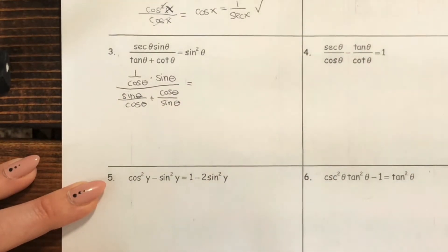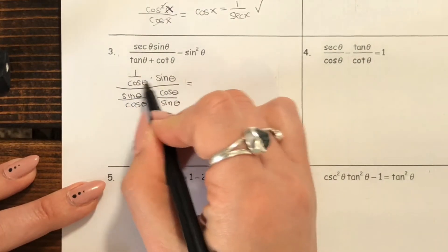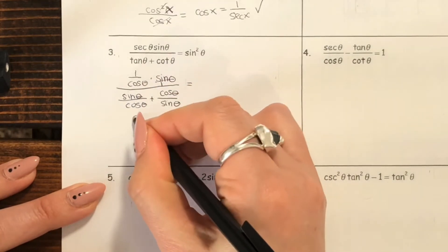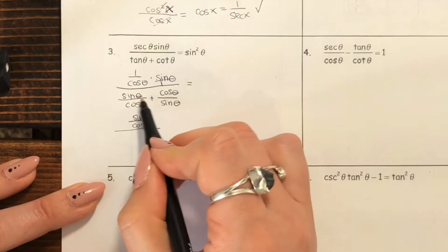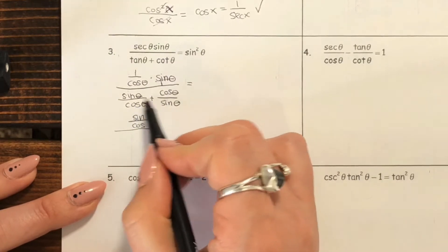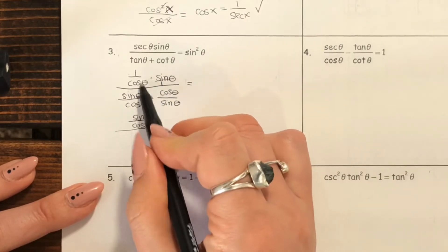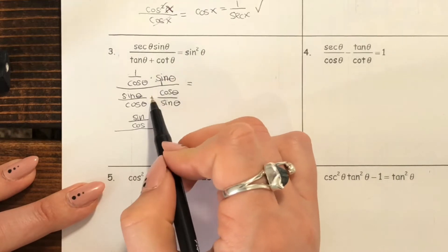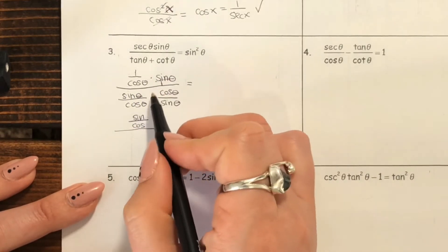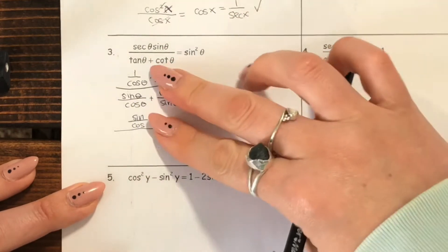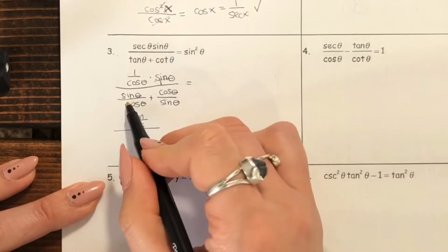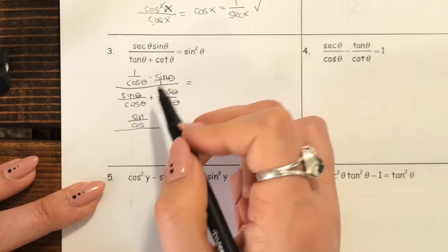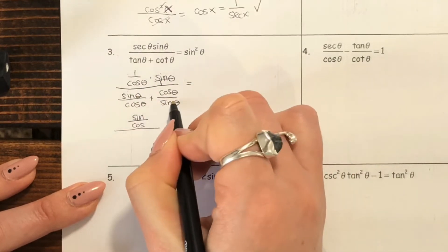This one is definitely going to get messier before it gets better. If we multiply this top together — think of this as being over a one — we get sine over cosine. On the denominator, we have two fractions that don't have a common denominator. Whenever we have a fraction divided by a fraction, we want to do keep-switch-flip to get rid of that double fraction. But right now, with two terms in the denominator, you can't just do keep-switch-flip — we have to get one term in the denominator first. Right now we have two terms.